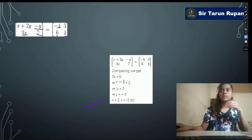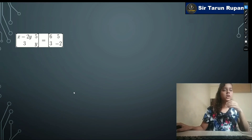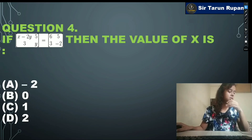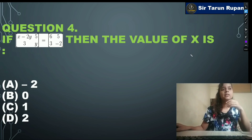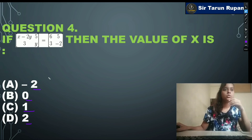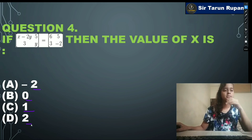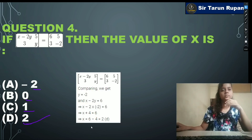You can see the solution. Next question: if [x-2y, 5] = [3, y] and y = [6,5;3,-2], then the value of x is — option A: -2, option B: 0, option C: 1, option D: 2. Our correct answer is option D: 2. You can see the solution here.